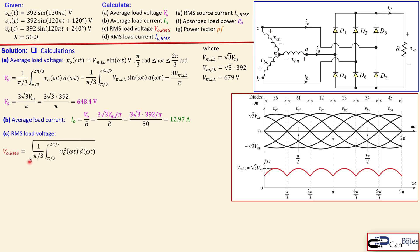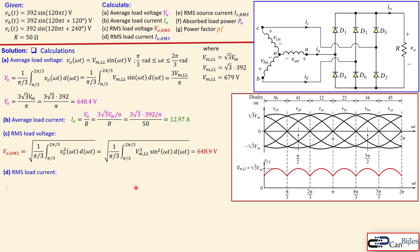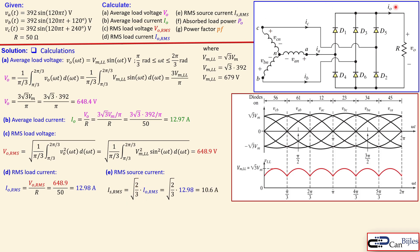The RMS load voltage uses the same period of π/3, integrating between the lower and upper limits but squaring the load voltage expression. Substituting and calculating gives an RMS load voltage of 648.9 volts. The RMS load current is that value divided by 50 ohms, giving 12.98 amps — very close to the average load current. The source current RMS equals the square root of two-thirds times the load current RMS, giving 10.6 amps.